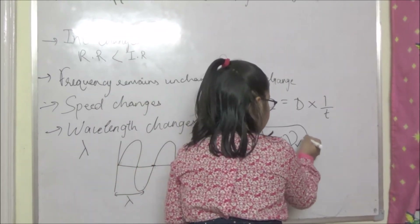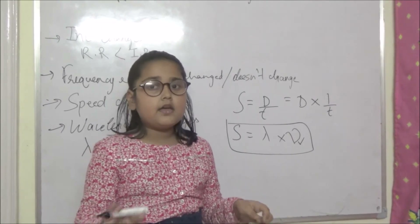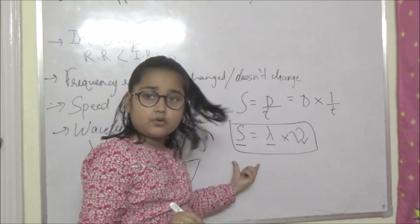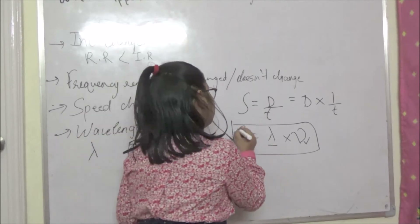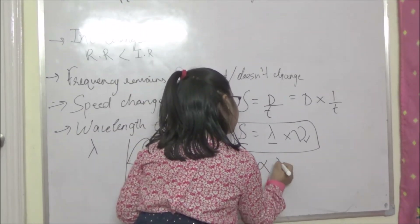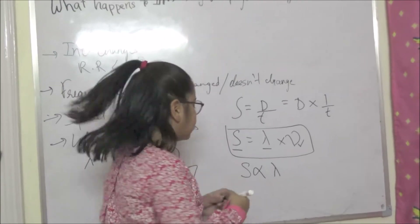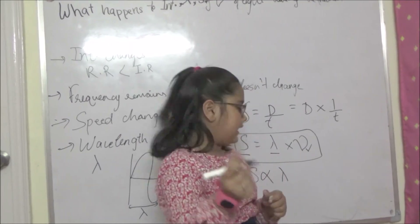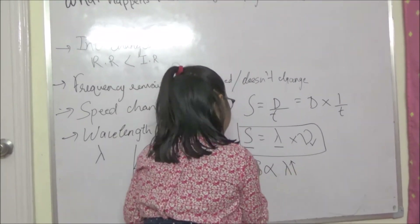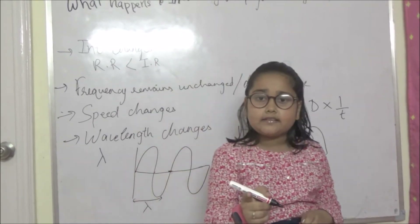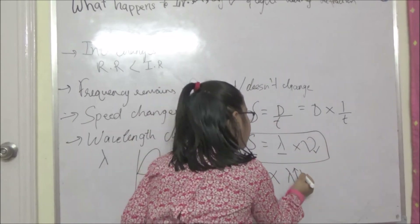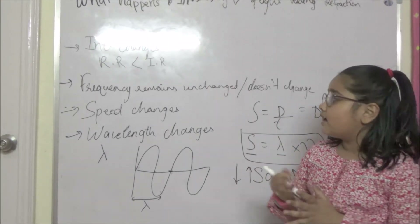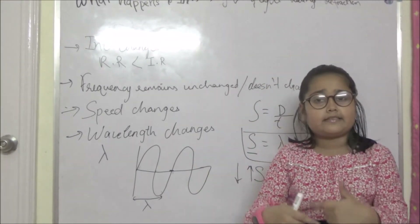Friends, frequency stays the same during refraction, so speed is directly proportional to wavelength. When speed increases, wavelength also increases. When speed decreases, wavelength also decreases. This is how we can figure out when the wavelength increases and when it decreases during refraction.